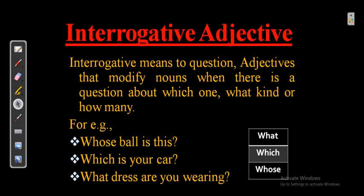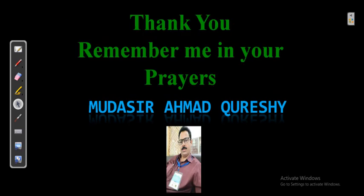Interrogative adjective involves a note of interrogation — we are asking questions. Words in a sentence which ask a question are called interrogative adjectives. There are three interrogative adjectives: 'what,' 'which,' and 'whose.' For example: 'Whose ball is this?', 'Which is your car?', and 'What dress are you wearing?' — 'whose,' 'which,' and 'what' are interrogative adjectives.